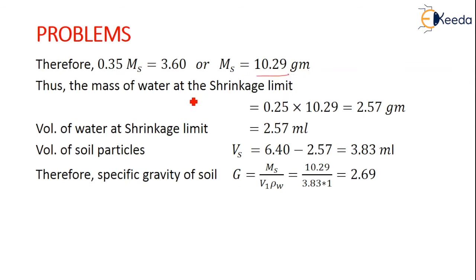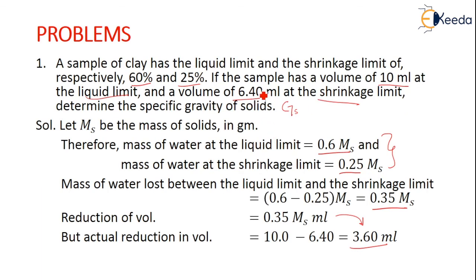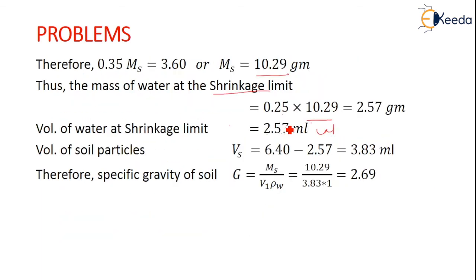The mass of water at shrinkage limit is 0.25 times Ms. Substitute the value of Ms, we get 2.57 grams. The volume at the shrinkage limit is 2.57 ml. The volume of soil particles is 6.4 minus 2.57, that is 3.83 ml.